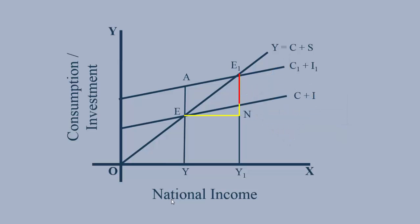This resultant increase in income EN, which is greater than the new investment E1M. The multiplier is EN divided by E1M, which is greater than 1. Hence, the increase in national income is greater than the initial investment.